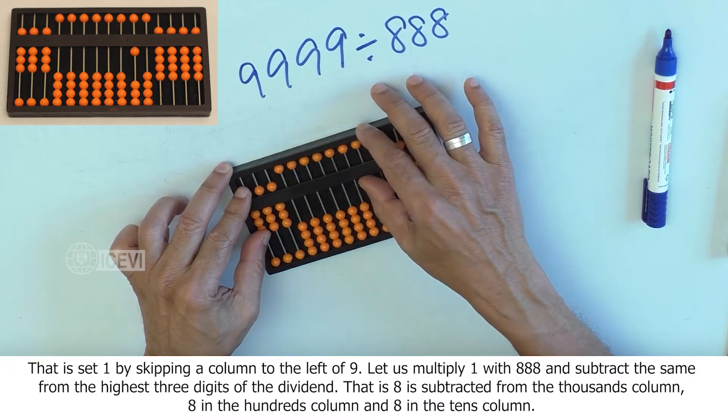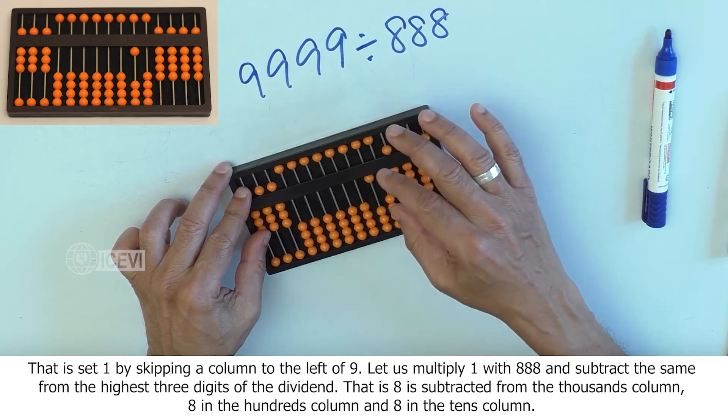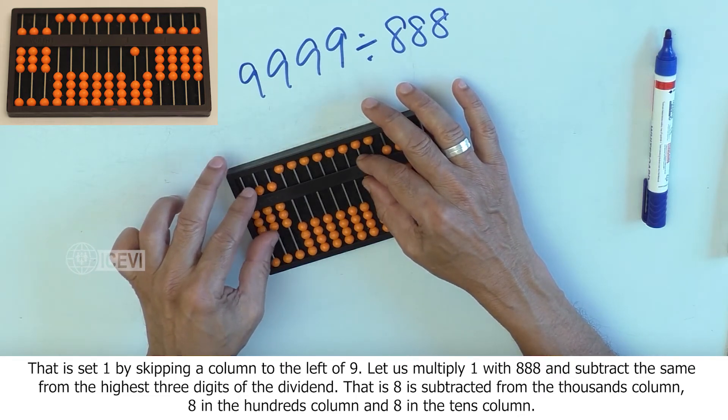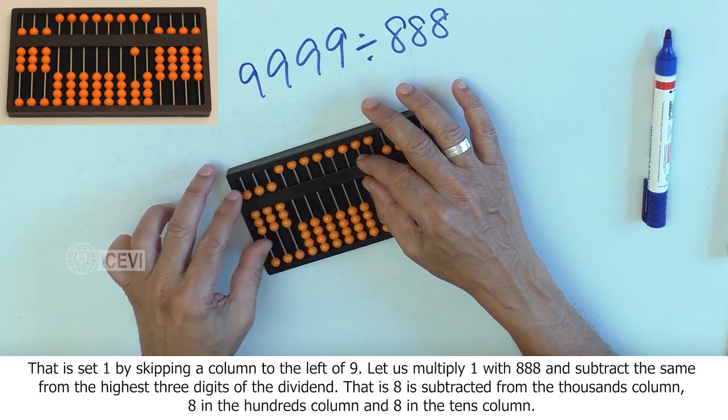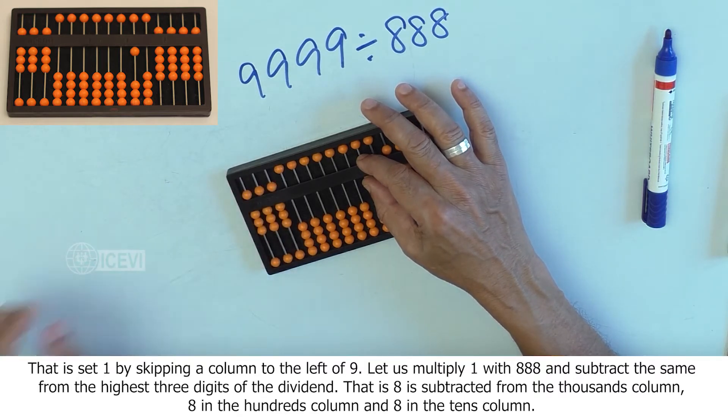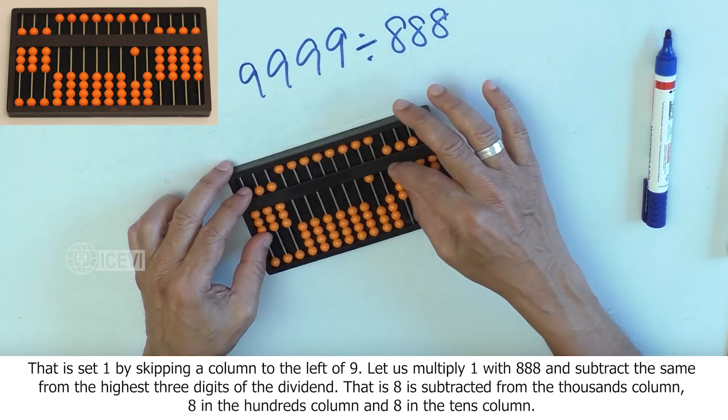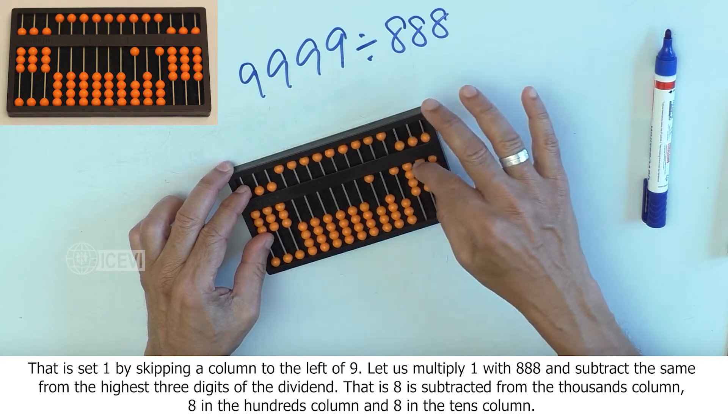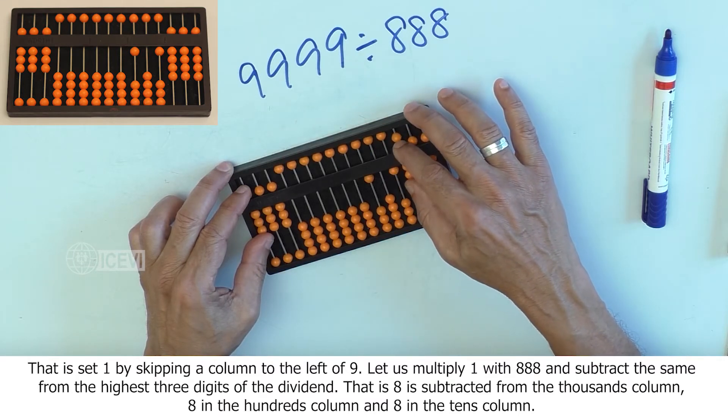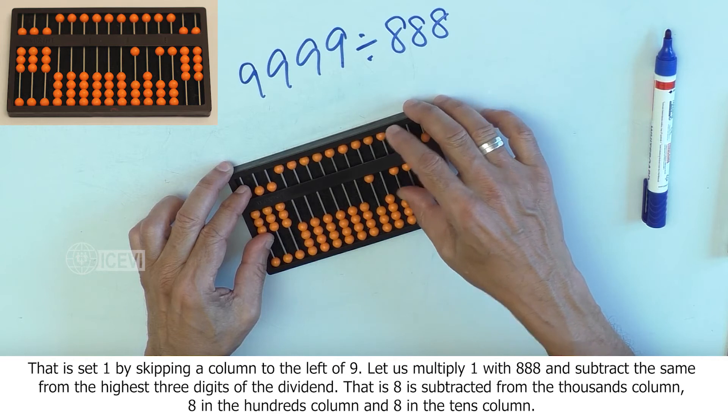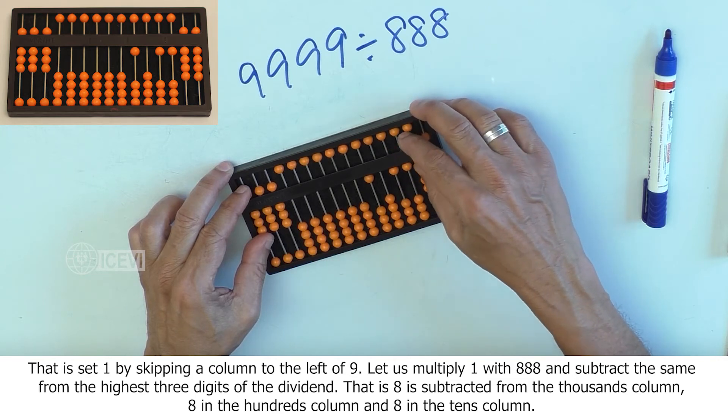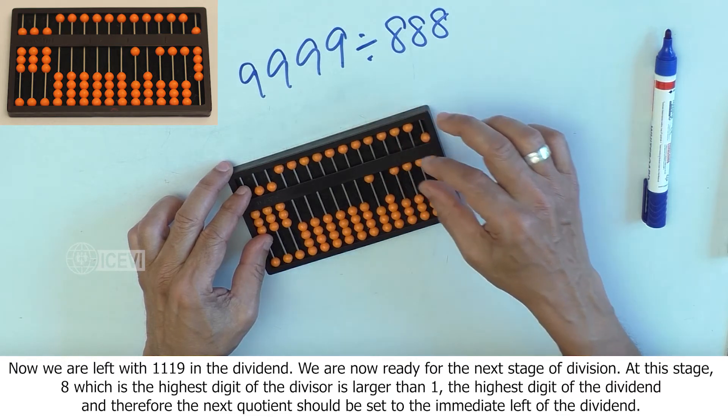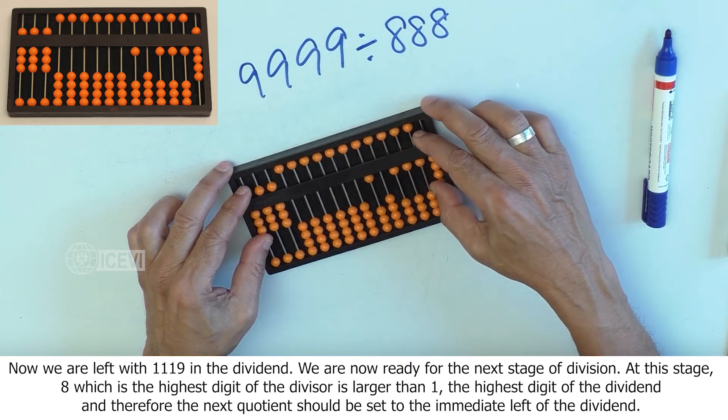Let us multiply 1 with 888 and subtract the same from the highest 3 digits of the dividend. That is, 8 from the thousands column, 8 from the hundreds column, and 8 from the tens column. Now we are left with 1119 in the dividend.